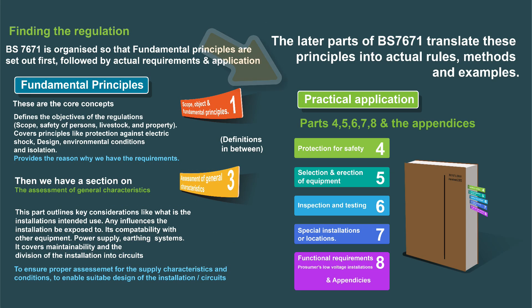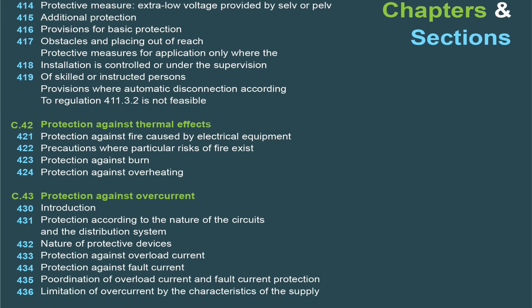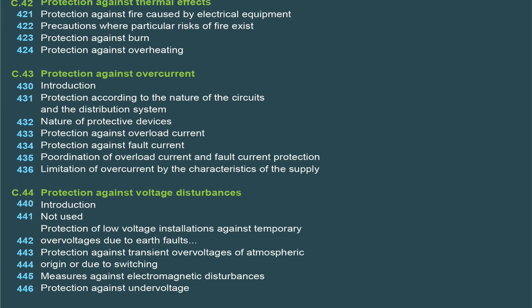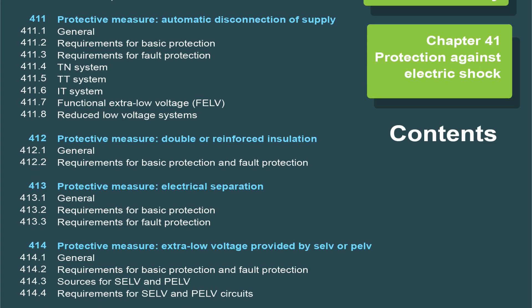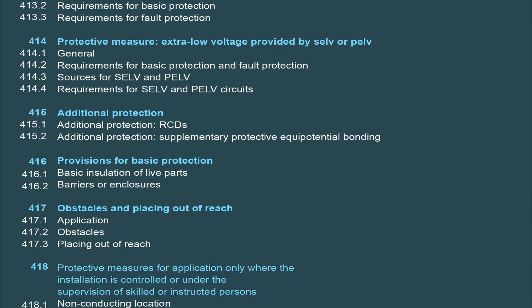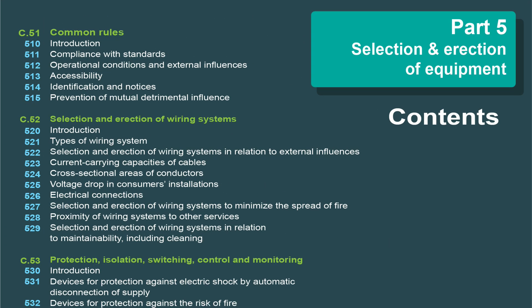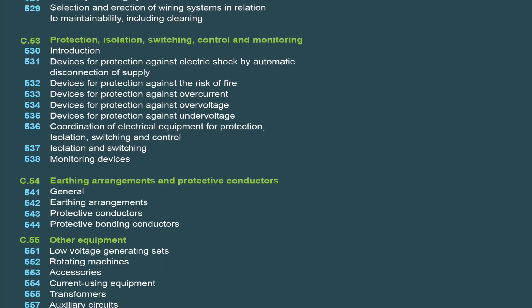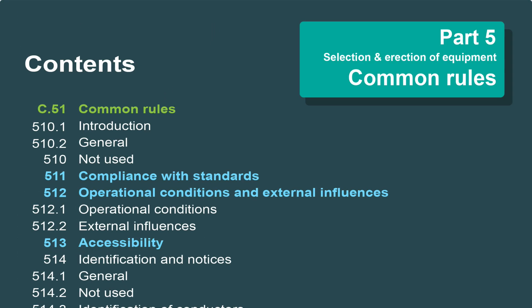Then the rest of the book is how we translate these fundamental principles into practical application. Parts four, five, six, seven, and eight give us the actual rules, regulations, methods, examples, specifications, installation methods, and important values like earth fault loop impedance and current carrying capacity — to help with the actual nuts and bolts of the installation.